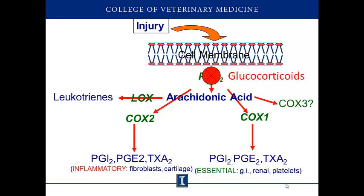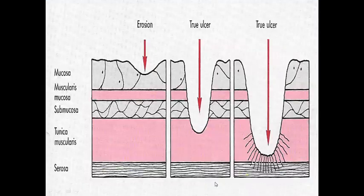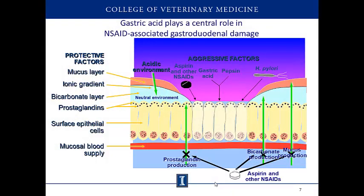The most sensitive organ to the side effects of non-steroidals is by far the stomach. Prostaglandins are crucial for protection of the gastric mucosal lining against gastric acid. If we give non-steroidals and remove that protective mechanism, we make the stomach vulnerable to developing gastric ulcers. How do prostaglandins protect the mucosa? Prostaglandins produce a protective layer on top of the epithelial cells that is rich in bicarbonate and mucus, preventing the acid and pepsin from coming into direct contact with those cells.